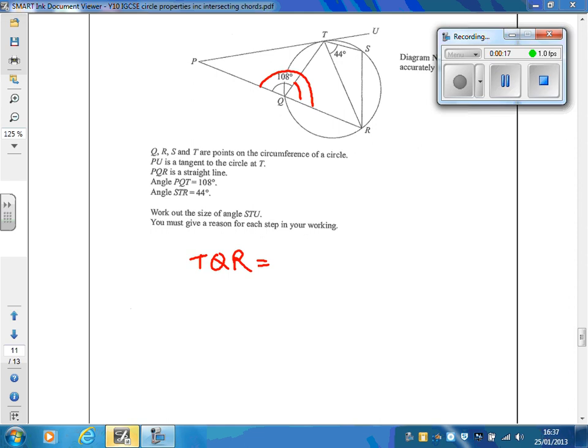So TQR is just going to be 180 take away 108, which is 72 degrees. In brackets, then you need to write that the reason for that is that you've got a straight line.